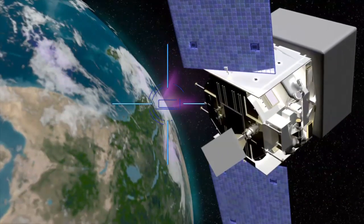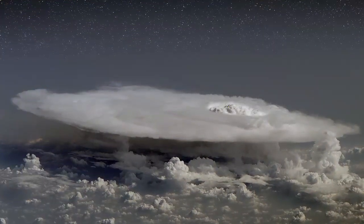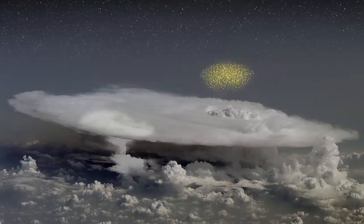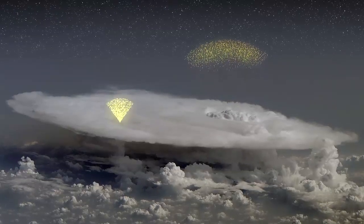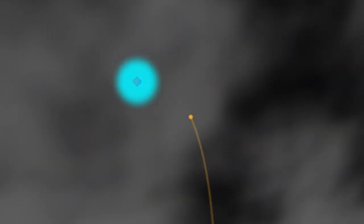Scientists believe that the TGF process begins in a thunderstorm's intense electrical field. Electrons within this field become accelerated upward. Above the storm, where the air is thin, the electrons can ramp up to speeds nearly as fast as the speed of light. When these ultrafast electrons encounter an atom, they emit gamma rays.